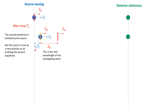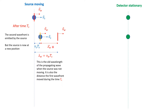The distance the source has moved is v_source times T_source. That means the second wavefront is emitted not at the location where the first wavefront was emitted, but a little bit to the right of that. So the distance between the two wavefronts — the new wavelength λ' — is a bit less than before.